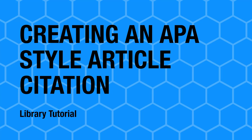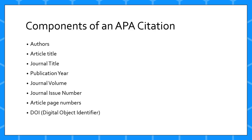In this video, you'll learn how to create a citation for a scholarly article in APA format. An article citation is made of several common elements, which include the article authors, article title, journal title, publication year, journal volume and issue numbers, page numbers, and DOI.